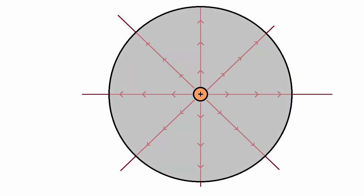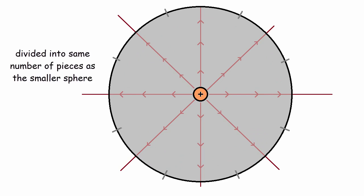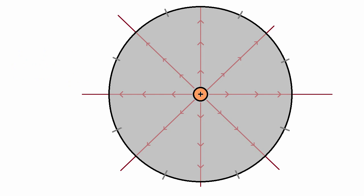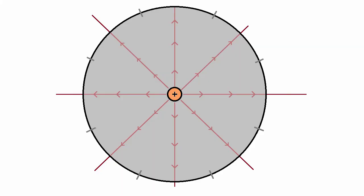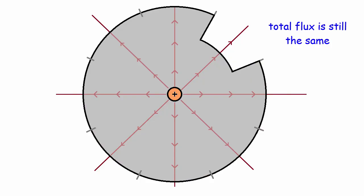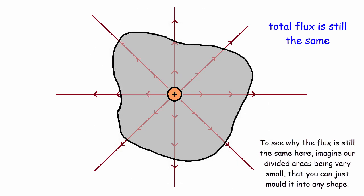Now let's get a slightly bigger sphere and divide it up into the exact same number of pieces. By the same argument, the amount of flux through each piece on this sphere will have to be the same as well, and it'll equal the flux through each piece on our smaller sphere. So if I take one piece of the smaller sphere and replace it with the larger one, the amount of flux will still be the same. In fact, I can keep doing this and create any sort of volume I want, and the flux through that volume will still be the same. The amount of flux through our volume doesn't actually depend on the shape of our volume itself.